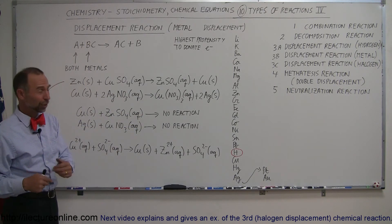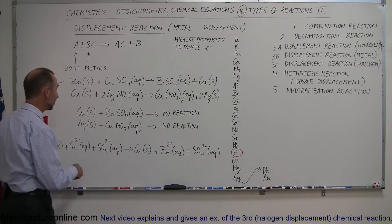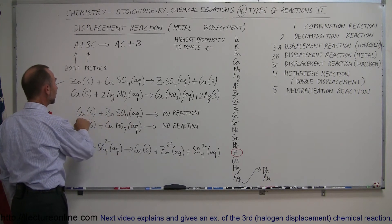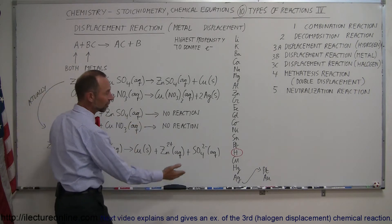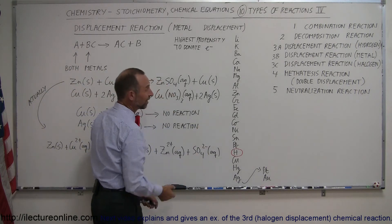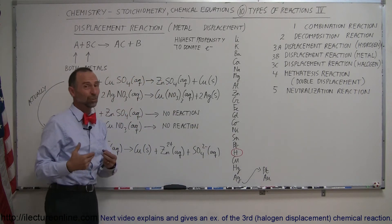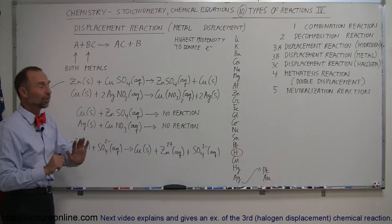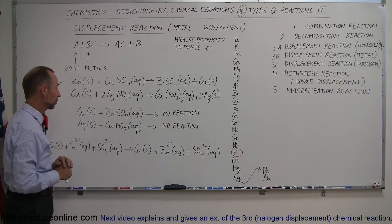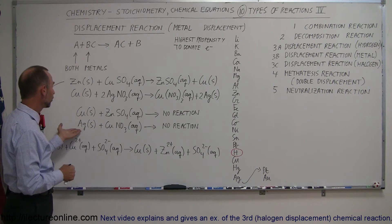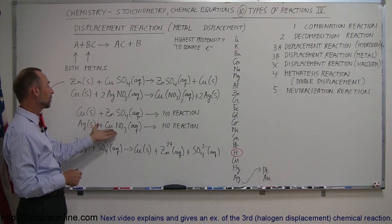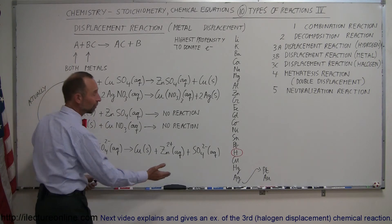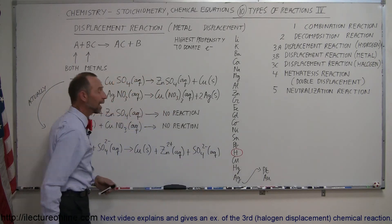What happens if you try it the other way around? If you have zinc sulfate in solution and throw copper in, nothing will happen — copper is lower on the list than zinc, so zinc is more likely to donate electrons to the ions in solution, and copper is simply ignored. Similarly, throwing silver into a copper nitrate solution produces no reaction, because silver is lower on the activity list than copper.